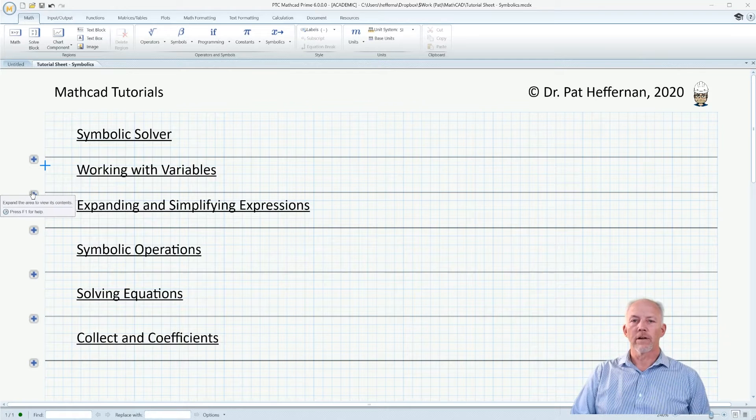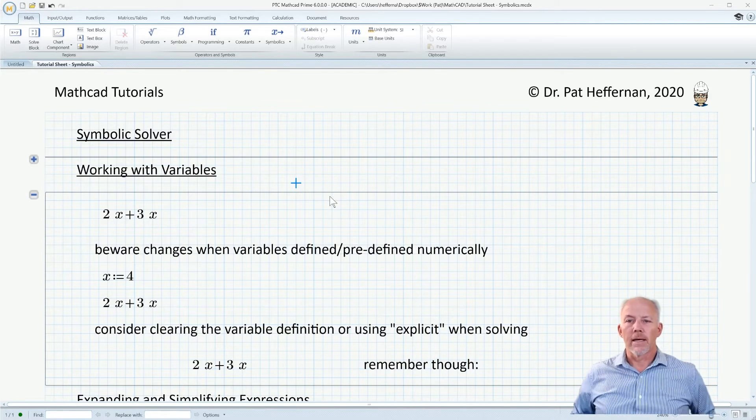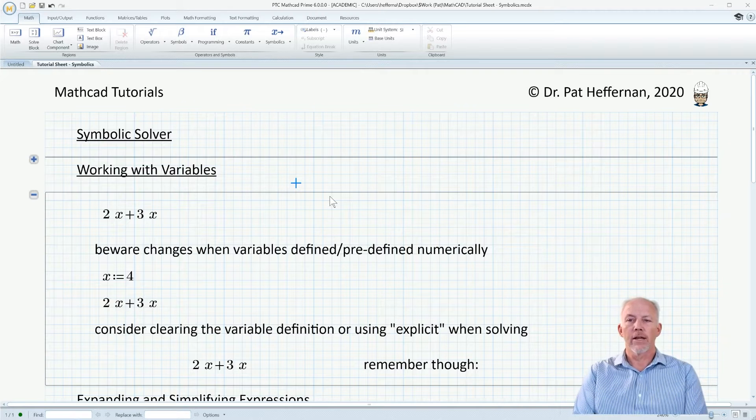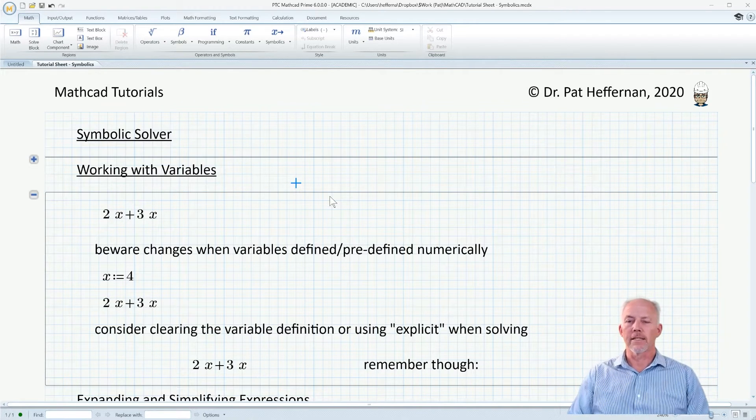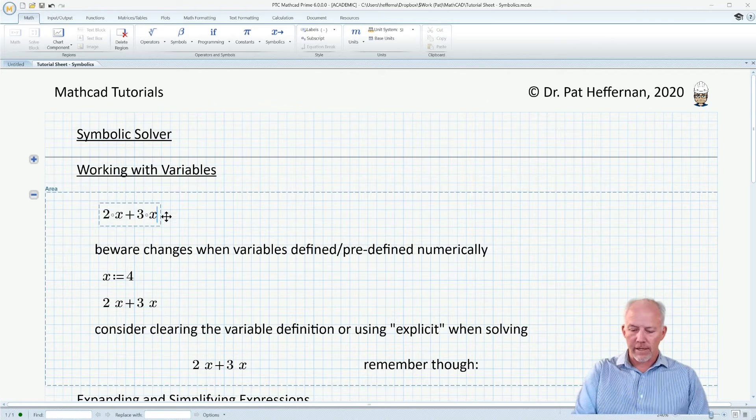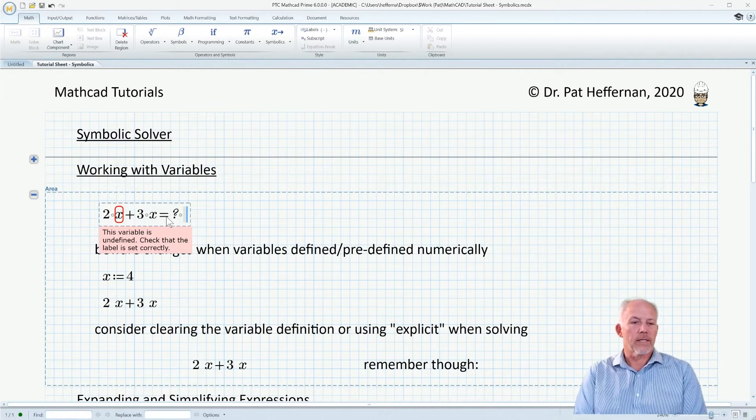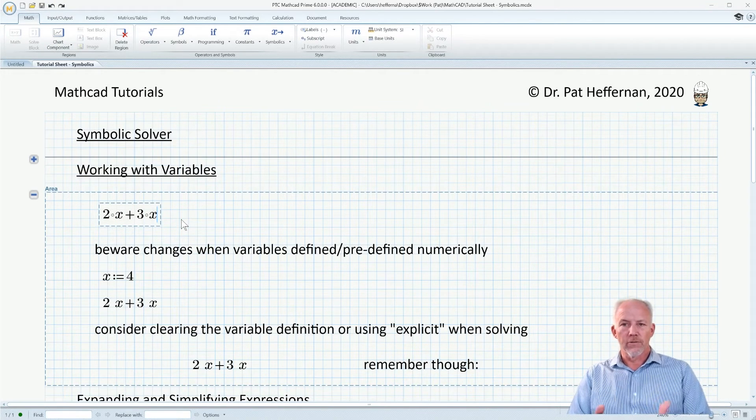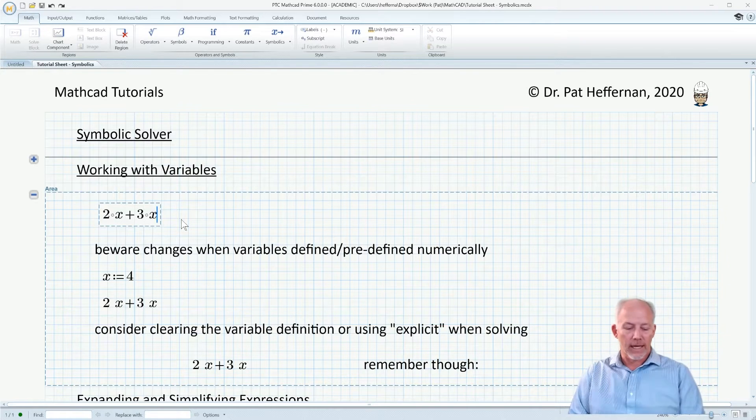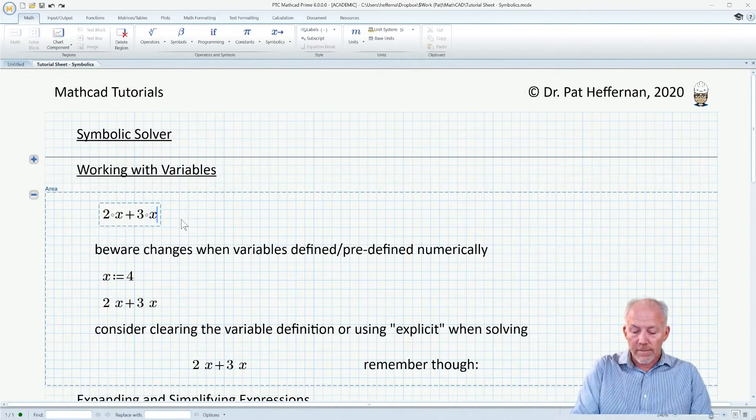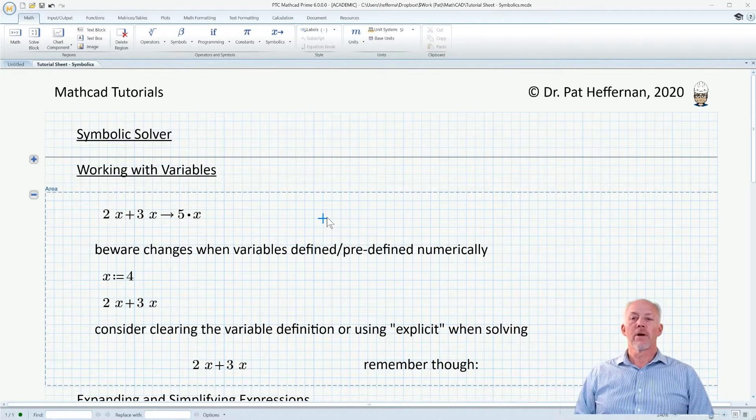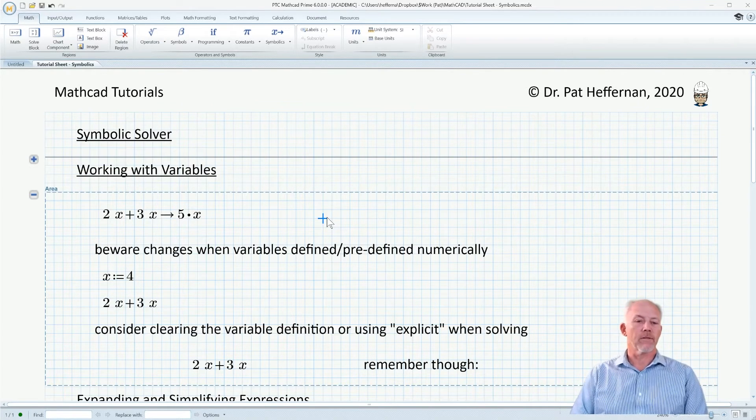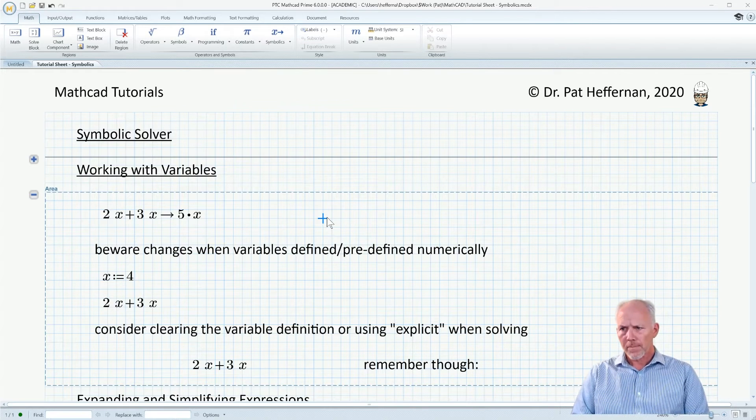On to the next section, working with variables. We have 2x plus 3x, and note that x is not defined at this stage. If we were to hit the equal sign, it's going to give us an error because the variable is undefined. However, if we wanted to resolve that as a function of the variable x and we engage the symbolic solver, it will resolve it symbolically in terms of x. 2x plus 3x, as you would expect, gives us back an answer of 5x.